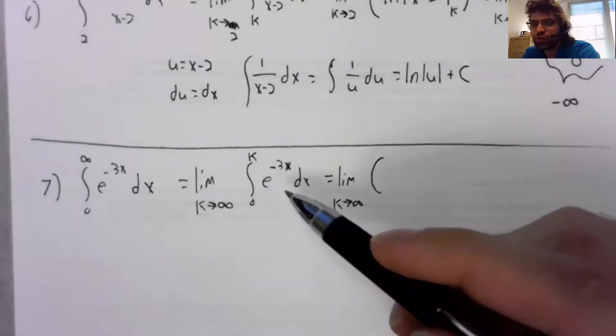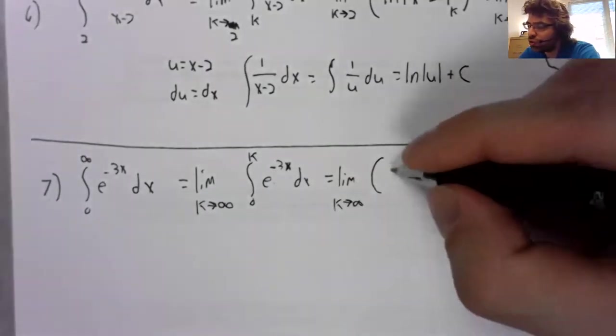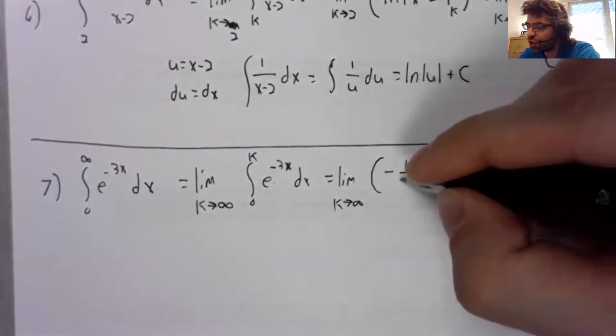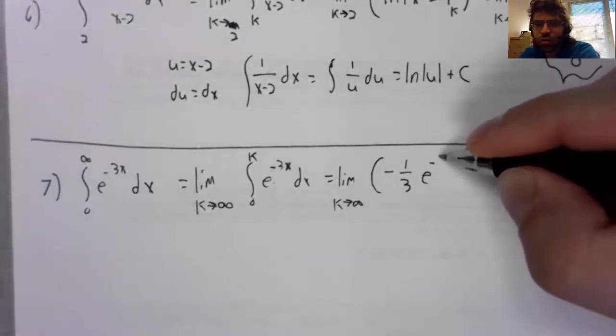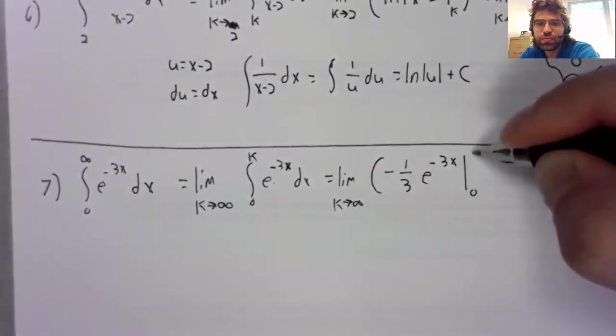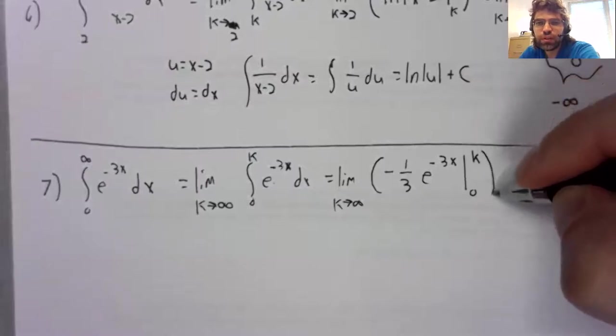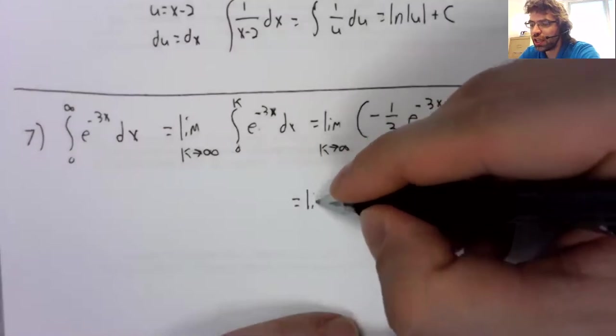If you have trouble with this antiderivative, you can use a U substitution. But it's negative one third e to the negative three x. And we're evaluating from zero to k.